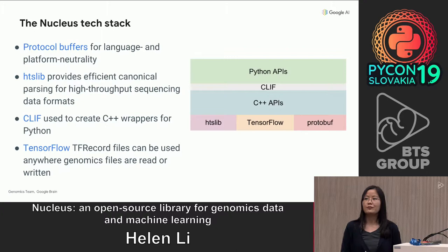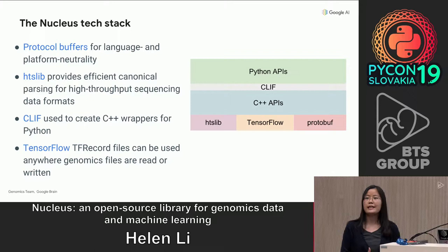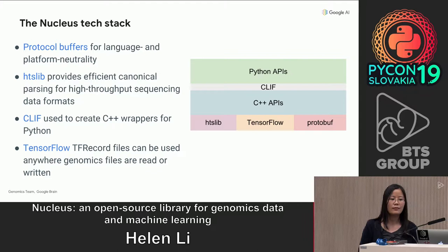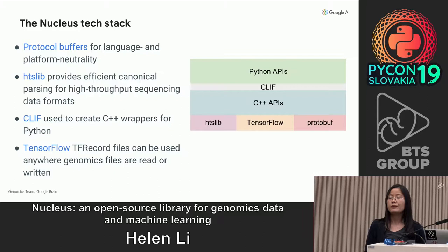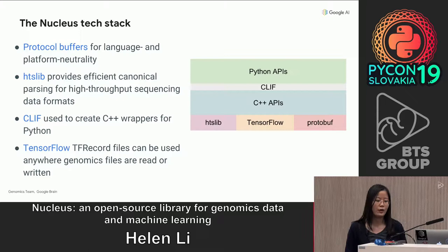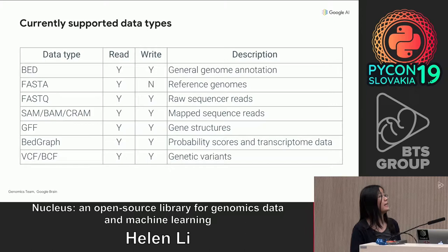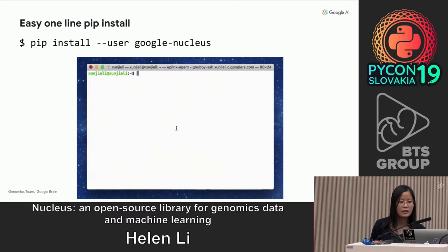The way we developed Nucleus is to use protocol buffers under the hood. Protocol buffers take care of serialization and deserialization, so the data works across language boundaries. We then use HTSlib, a canonical parser for high-throughput sequencing data. We use SWIG on top of this to make the Python layers communicate with the C++ layers. We also use TensorFlow core libraries to write out genomics data in TF record format, so the genomics data can be accessed by TensorFlow APIs. The currently supported data types range from general genome annotation to sequencing reads, whether directly from the sequencers or mapped, to genetic variants.